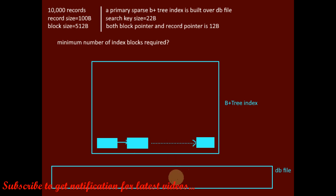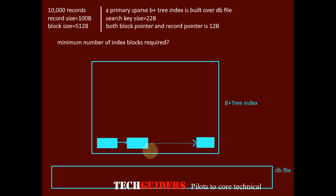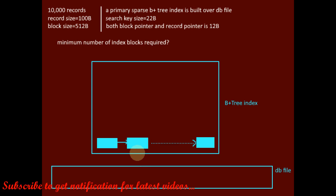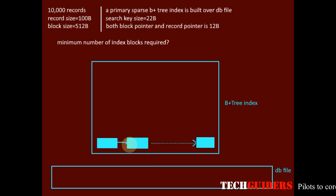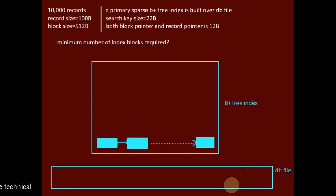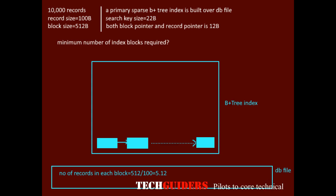Hence, for every record of the database file, there will not be an entry in the leaf node. For each and every block of the database file, there will be one key-data pointer pair in the leaf node. To find the total number of key-data pointer pairs in all the leaf nodes, we need to find the total number of blocks required to store the database file. The record size is 100 bytes and the block size is 512 bytes.